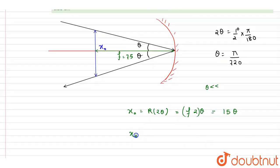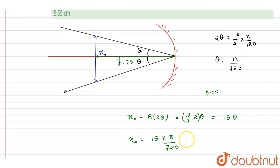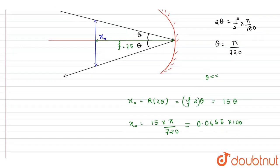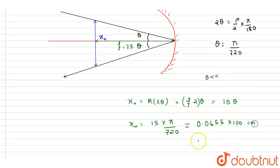Put the value. So I will write down 15 into theta equals 0.0655 meter. So convert it into centimeter by multiplying it with 100. So it will be 6.55 centimeter.